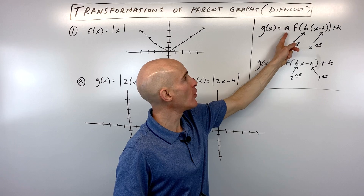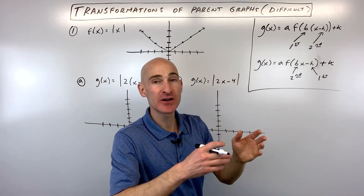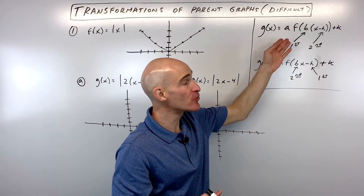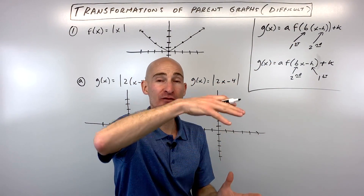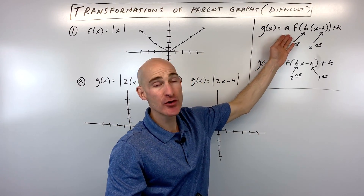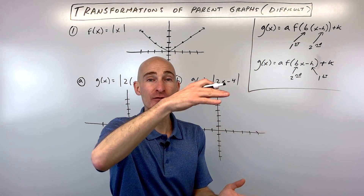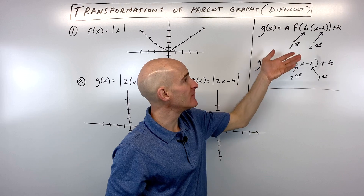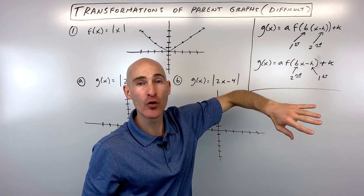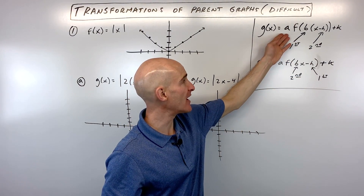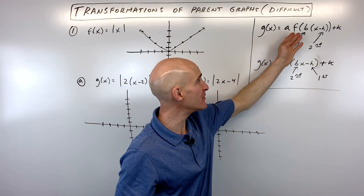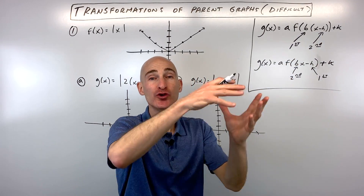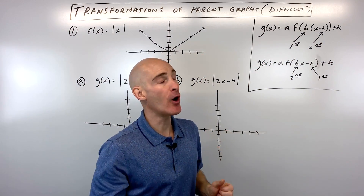The coefficient a controls vertical stretch or compress. If a is greater than one, it's a vertical stretch. If it's between zero and one, it's a vertical shrink or compress. If it's negative, it reflects over the x-axis. And lastly, k gives us the vertical shift up or down.